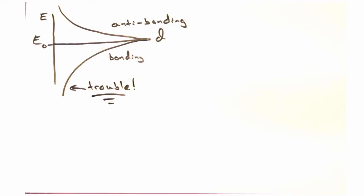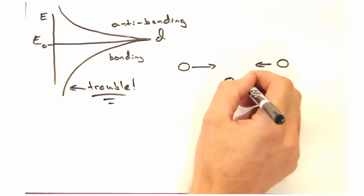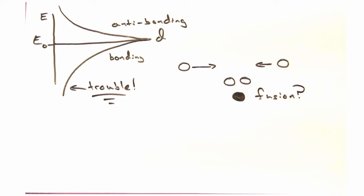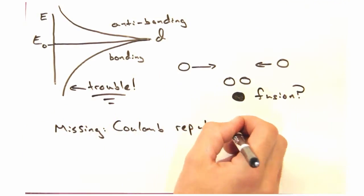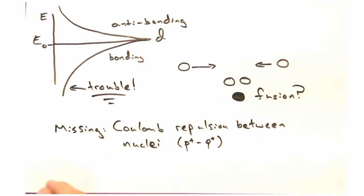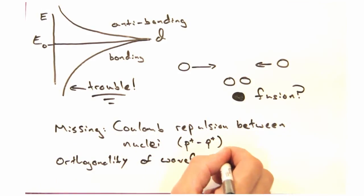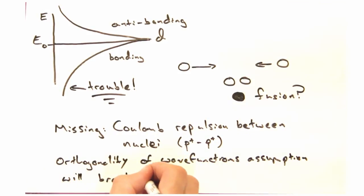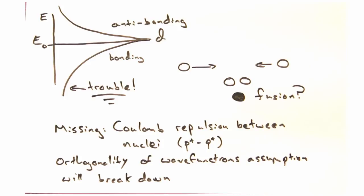But for short distances, this curve is busted. If this were actually true, all of matter would just collapse in on itself. Hmm, that doesn't sound so awesome. What's broken at these short distances? Well, we didn't include a coulomb repulsion term between the two nuclei, and our assumption about the orthogonality of the wavefunctions will break down as well.